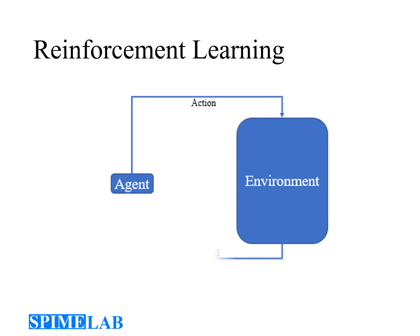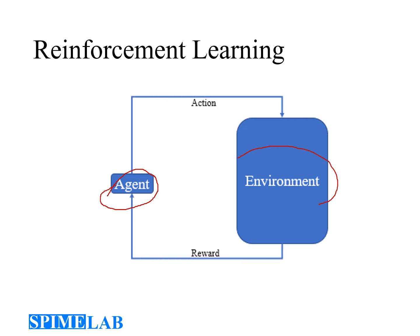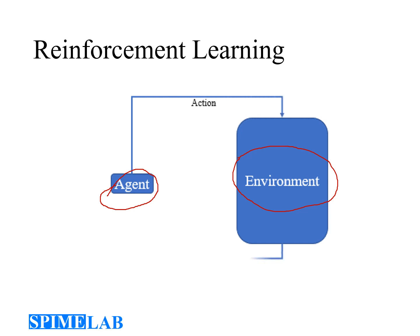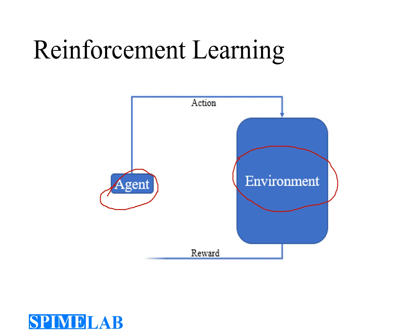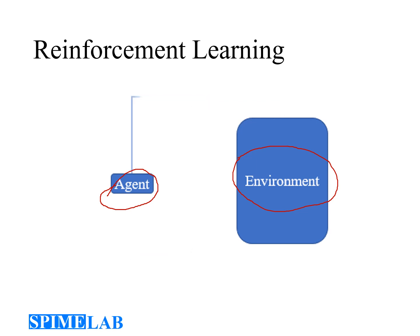We are going to deal with two main characters in this type of learning: the agent, which is the machine or robot responsible for finding the solution of a problem, and the environment, which represents the system that embodies the problem. The basic notion in reinforcement learning is that a machine can learn from experience — the experience of interacting with the environment through trial and error.